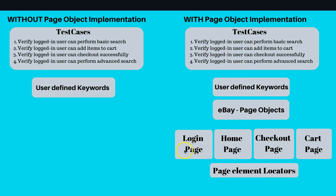With Page Object implementation, the login functionality is moved out into the login page object, and the element locators are moved to the locators file. From the login page object you define your user-defined keyword for login functionality, and you can directly call that keyword with the username and password — no need to duplicate or hard-code locators and page elements in each test case.